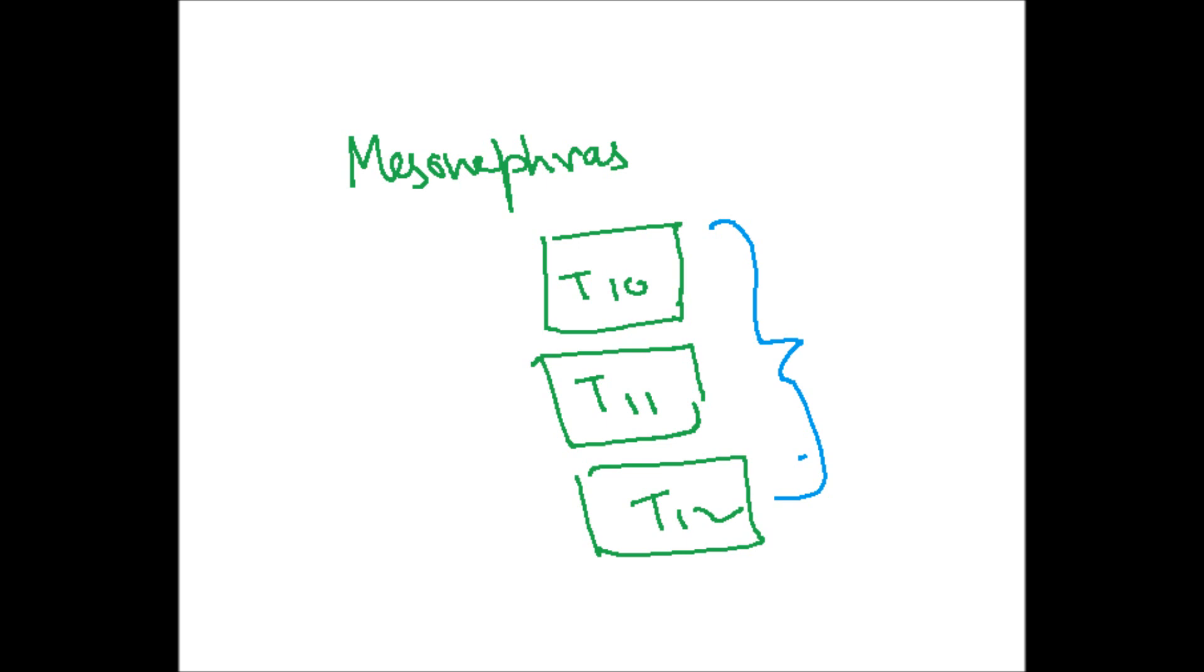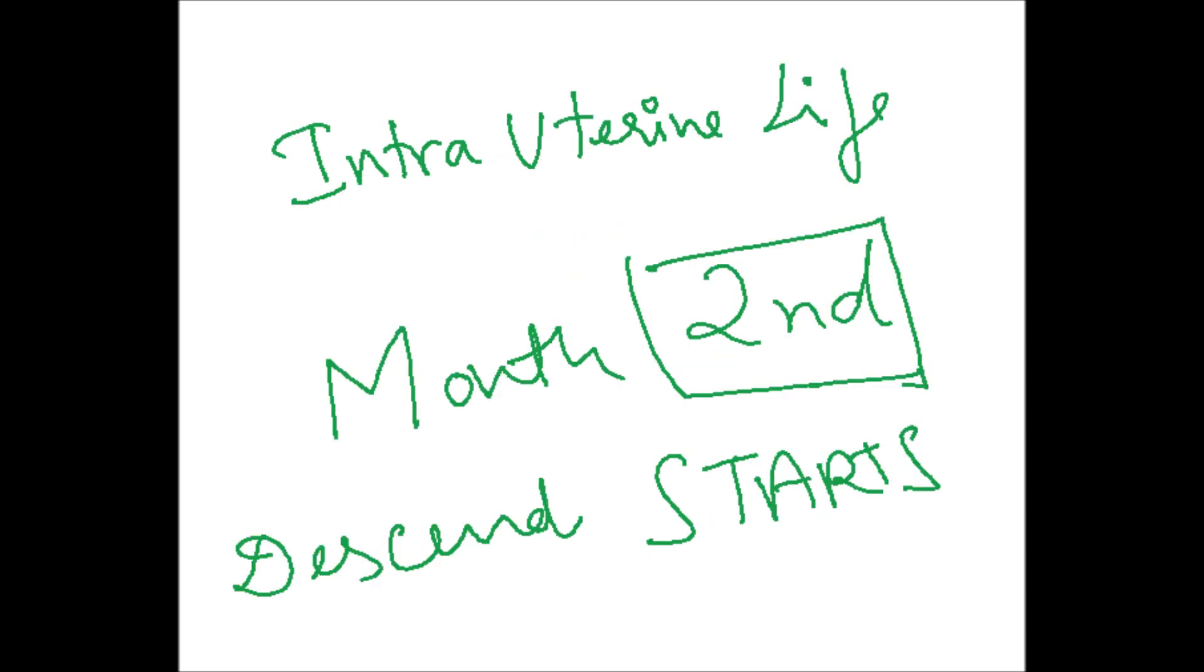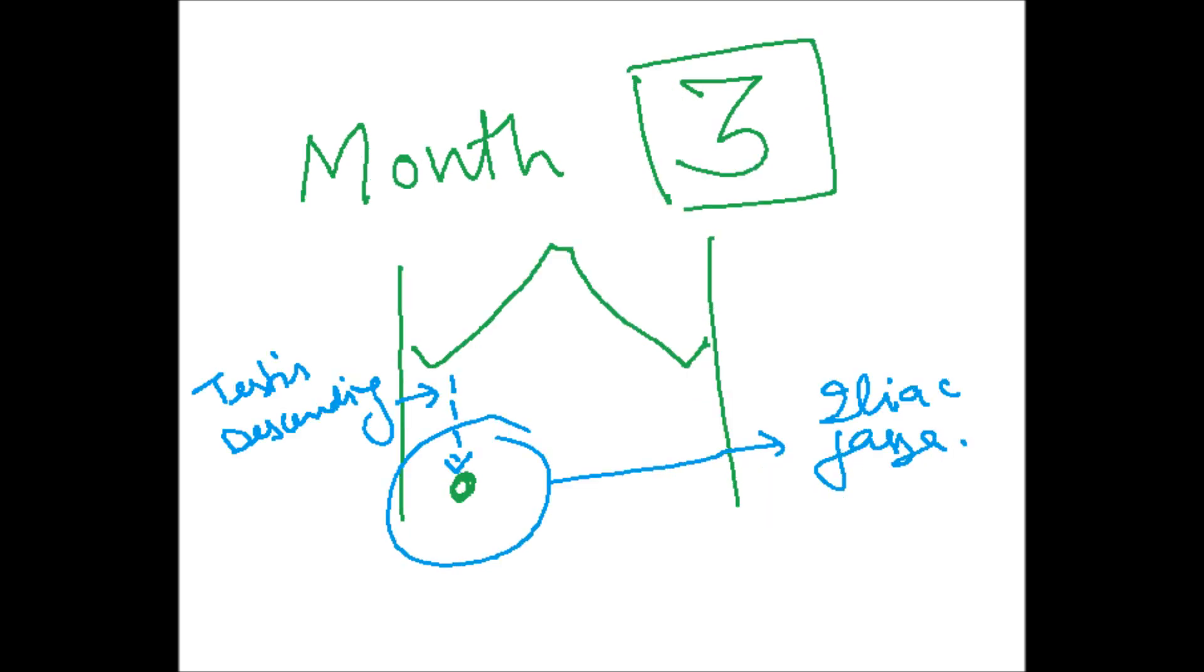The testis usually develops at the level of T10, T11, or T12 in this segment. After that it descends down to the scrotum. So it all happens from the second month to the ninth month.